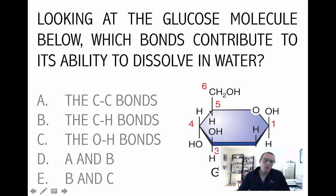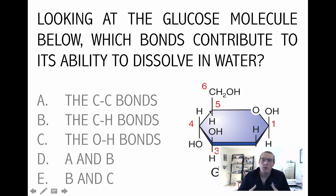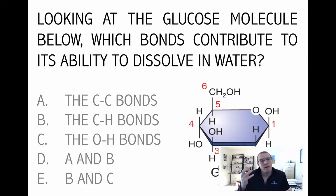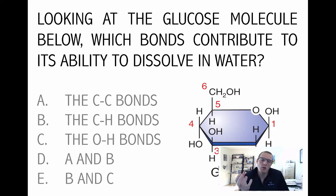But if you think back to our discussion on water and what makes it polar, it's the polar covalent bond. Those are bonds that form between a highly electronegative molecule and a less electronegative one — for example, between oxygen and hydrogen, or between carbon and oxygen.